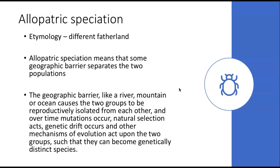There are two types of speciation. The first is called allopatric speciation. The etymology for allopatric means 'different fatherland,' meaning a geographic barrier separates two populations so they have a different land. That geographic barrier could be a river, a mountain, or an ocean, and it causes the two groups to be reproductively isolated because they simply cannot reach each other for hundreds of thousands of years. Over time, mutations occur, natural selection acts, genetic drift occurs, and those mechanisms cause the two groups to become genetically distinct species.